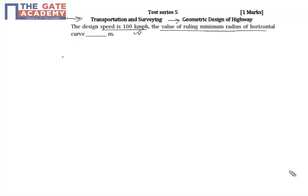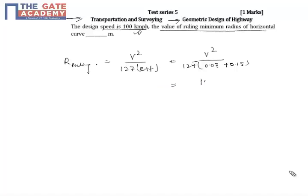We know that the radius of the ruling horizontal curve is R = V² / (127 × (E + F)). Substituting the values: 100² / (127 × (0.07 + 0.15)), which gives 358 meters.